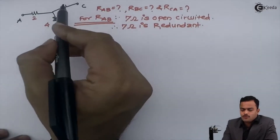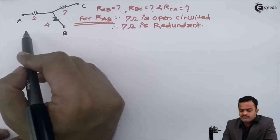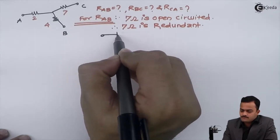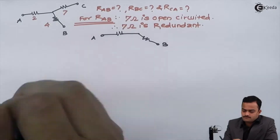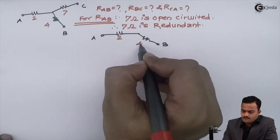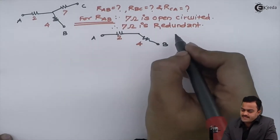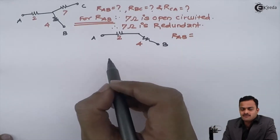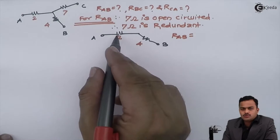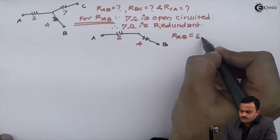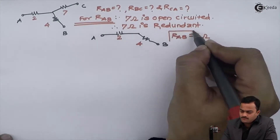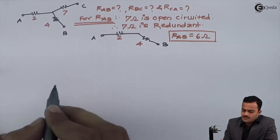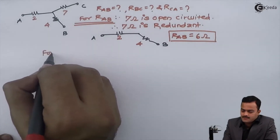You are not supposed to consider that resistor when calculating R_ab. The circuit then becomes a simple series combination of 2 ohm and 4 ohm, which gives R_ab equal to 6 ohm.